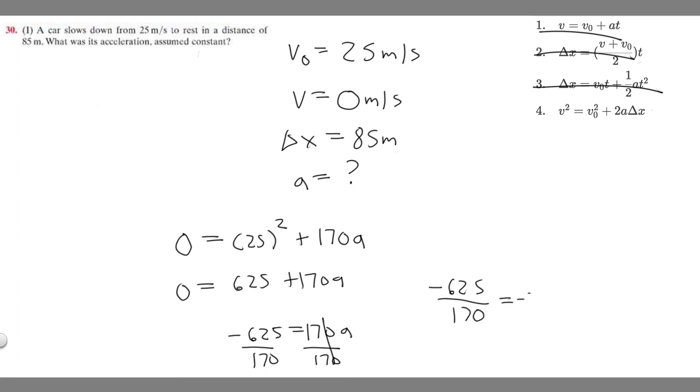And so it's going to be minus 625 over 170. And when you do that, you should get minus 3.676 and so on. We're just going to be rounding to the tenths place, so it's going to be minus 3.7. And keep in mind what acceleration is—acceleration is meters per second squared. That's the units we're using. So the answer to this problem is going to be minus 3.7 meters per second squared.